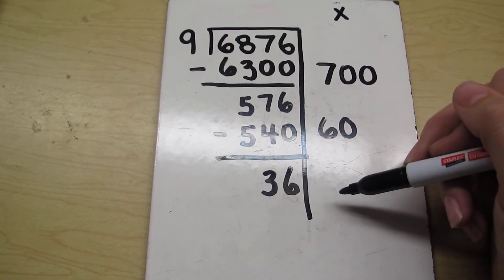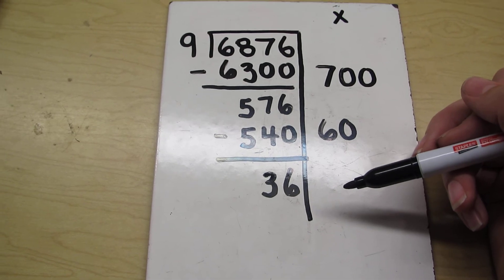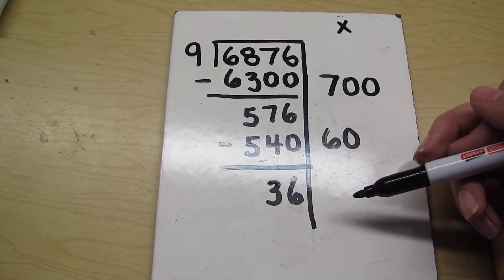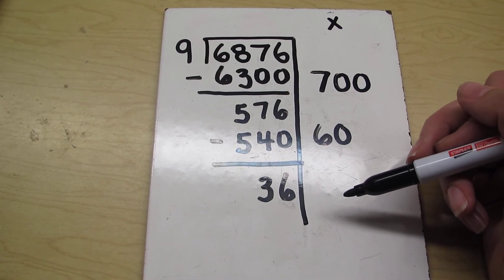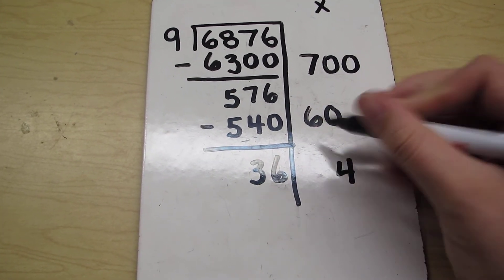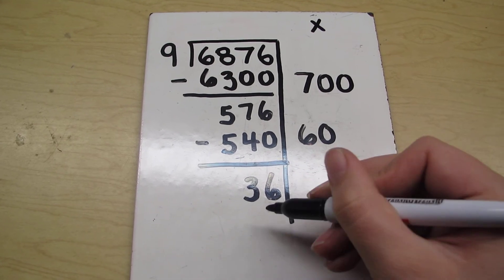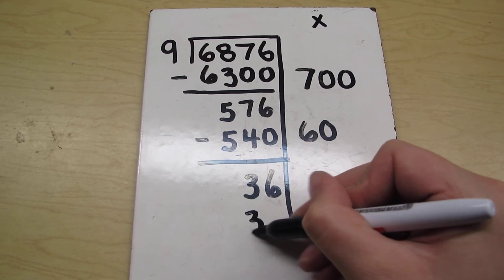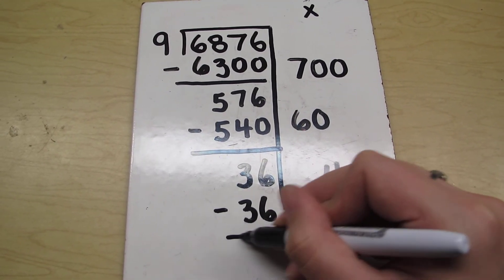Well, I just have to go over here now because of my awesome effort with Mad Minute and reflex. I'll know right away that 9 times 4 is 36. So 9 times 4 is 36. Do my subtraction.